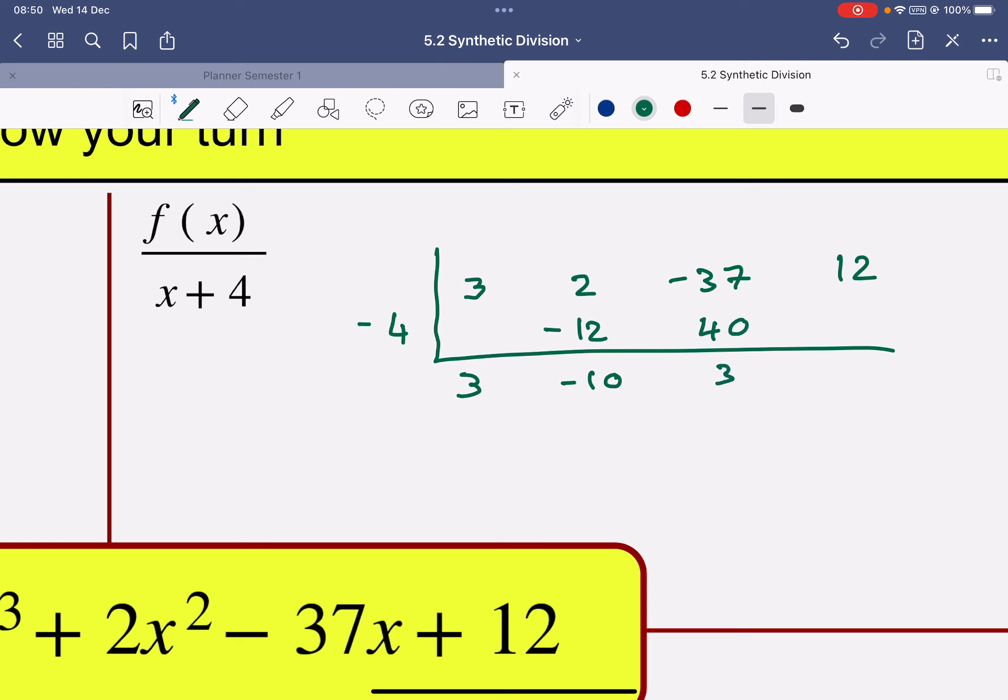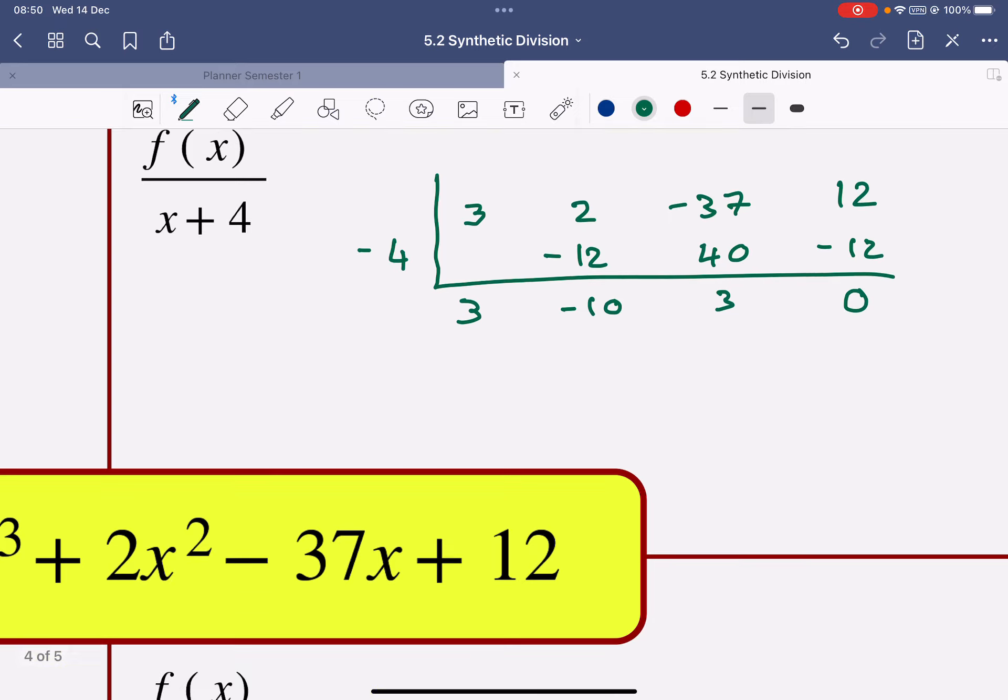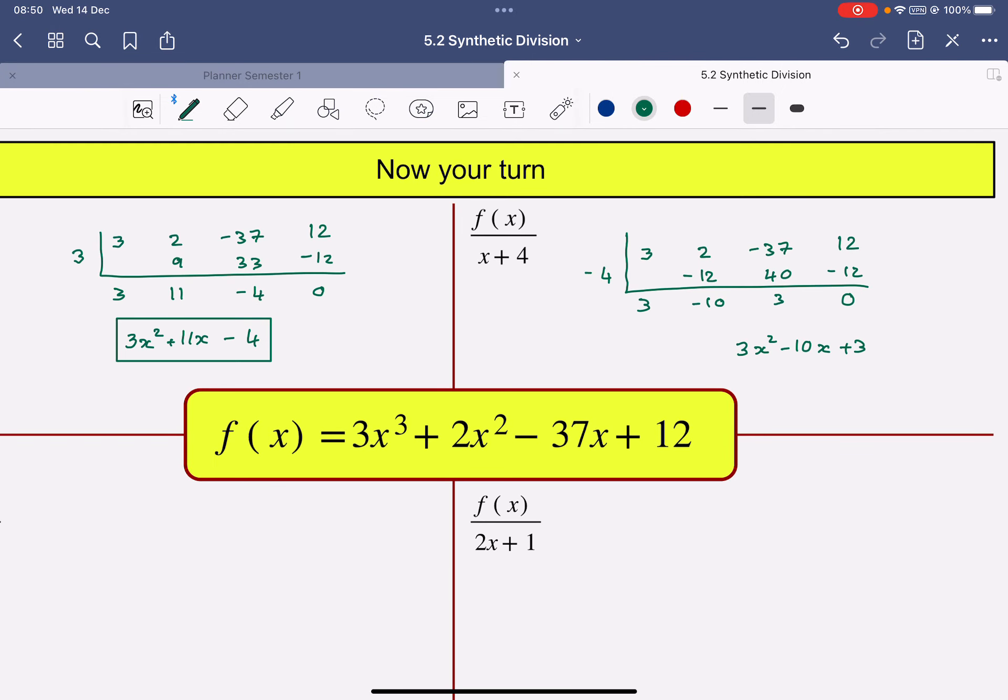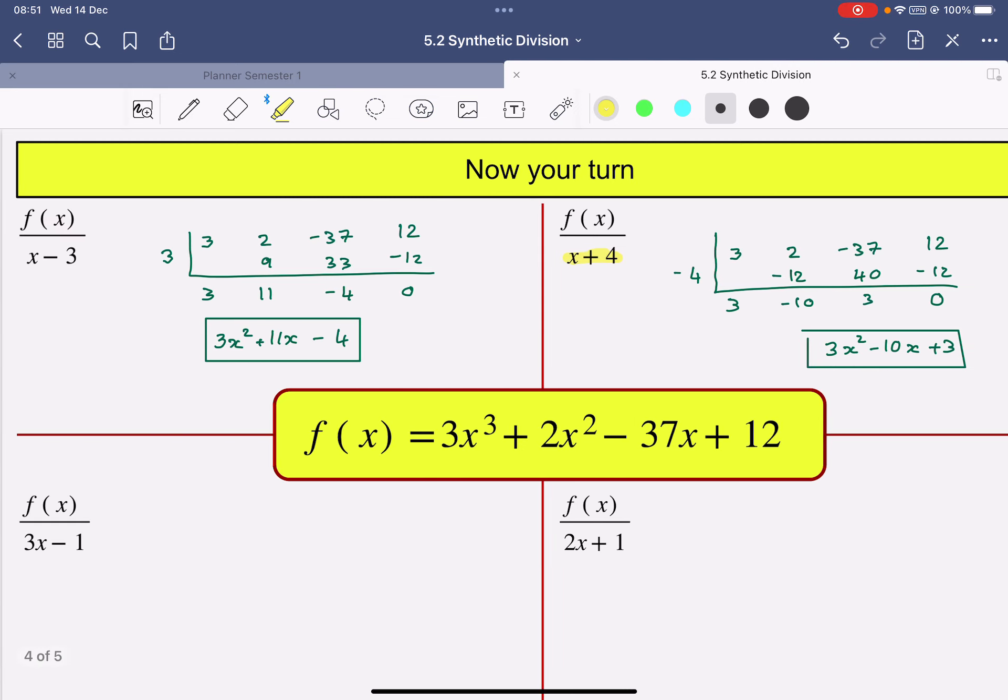3, negative 12, and 0. So this looks like another factor. 3x squared minus 10x plus 3. So what I've actually found here is two factors of the polynomial, just by chance, because there's no remainder. That's one of the factors, and that's the other factor.